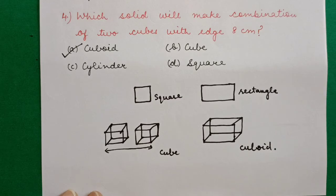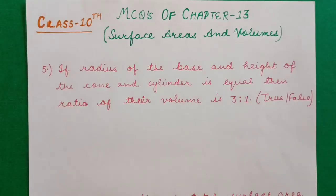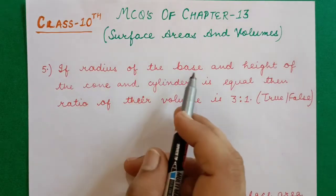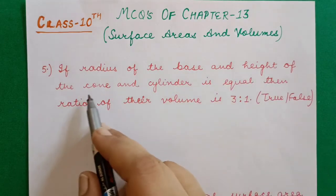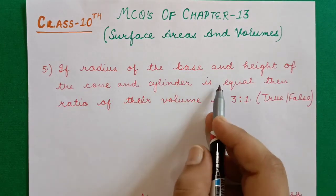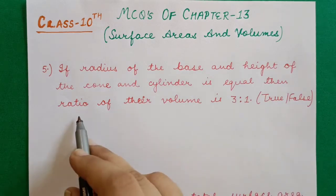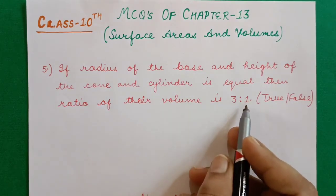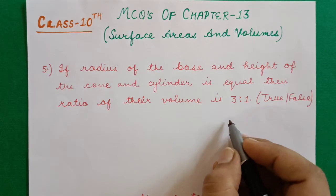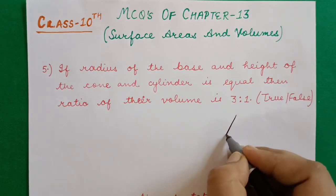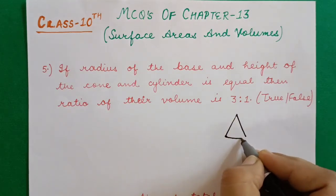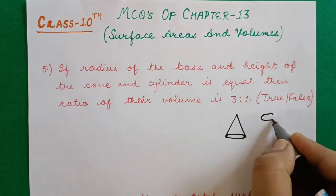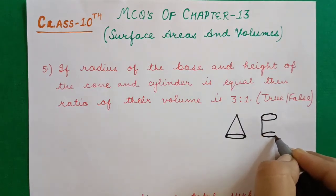Question 5: If the radius of the base and height of a cone and a cylinder are equal, then the ratio of their volumes is 3:1 — true or false? Given: both the cone and cylinder have equal radius R and equal height H.